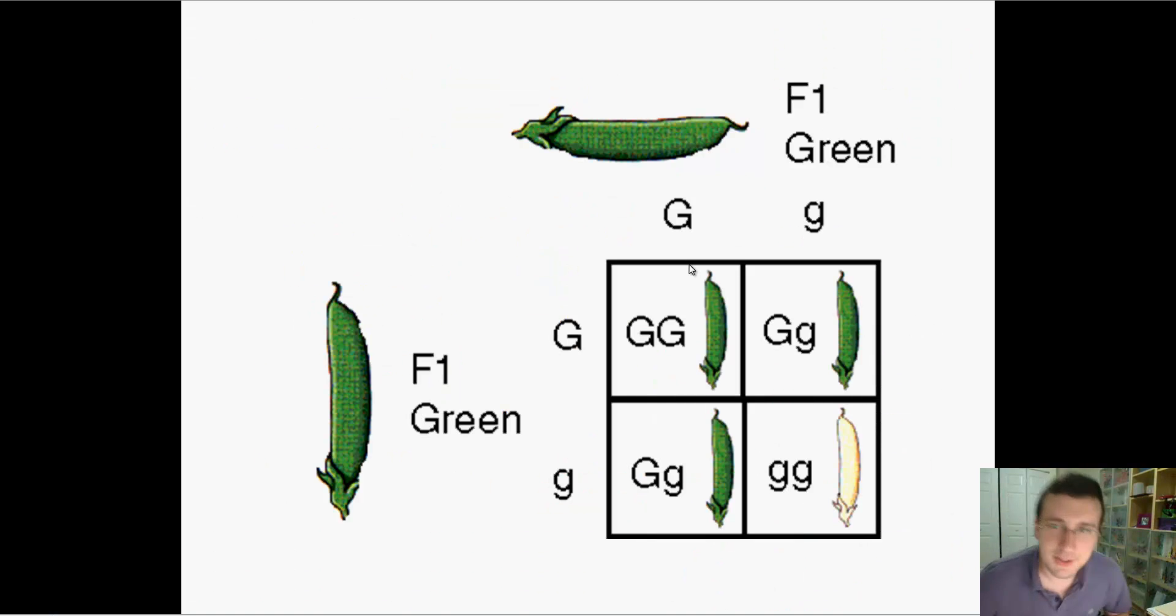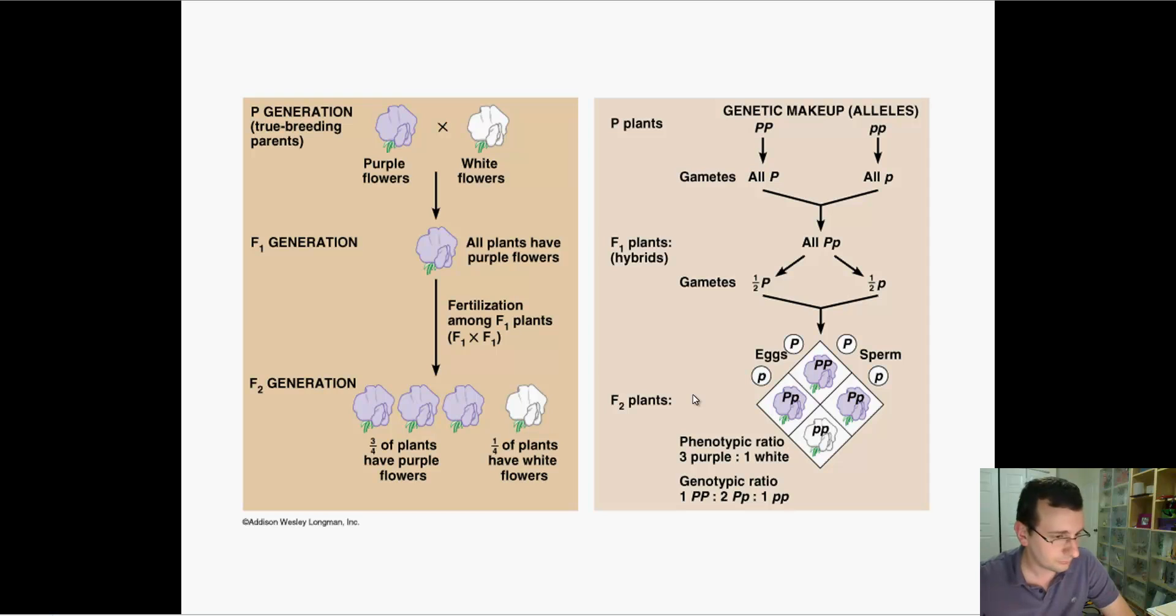I think I'm done, and I remembered that I have something else to show you. Here's another thing to add to the F1 cross video. This is basically just showing you how it actually looks with the traits in the cross. You can see that the pods are going to be 3 to 1. This is just a visual Punnett square of what we did on the other screen.